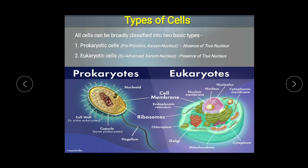The prokaryotic cell also shows the presence of flagella, which help the cell with movement. Along with that, it also shows the presence of pili — small hair-like structures on the outer side of the cell. This is all regarding the prokaryotes.